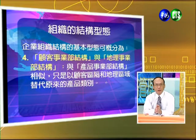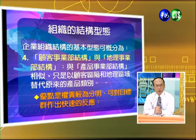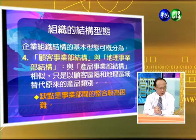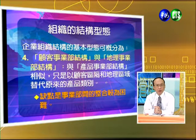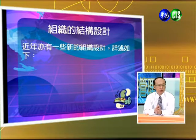顧客事業部和地理事業部的結構，基本上與職能式或產品式有些差異，優點是全責比較清楚，可以對目標做出快速反應，缺點是事業部之間的整合可能比較困難。另外還有一些新的組織結構，關於這方面請清江老師跟同學做個說明。